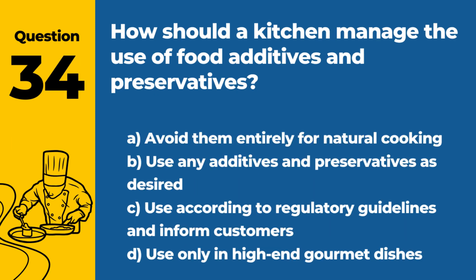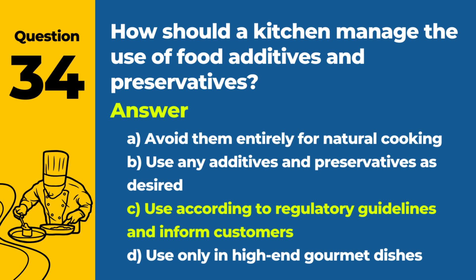Question 34: How should a kitchen manage the use of food additives and preservatives? a. Avoid them entirely for natural cooking. b. Use any additives and preservatives as desired. c. Use according to regulatory guidelines and inform customers. d. Use only in high-end gourmet dishes. Answer: c. The use of food additives and preservatives in a kitchen should be in compliance with regulatory guidelines, and customers should be informed about their use, especially if they have allergies or dietary restrictions.